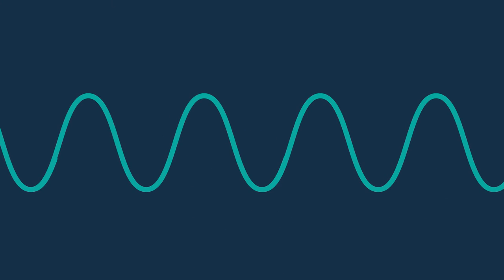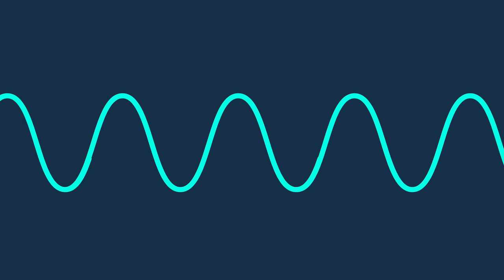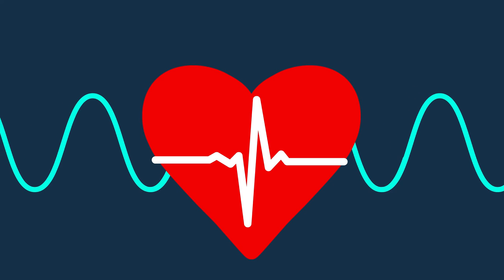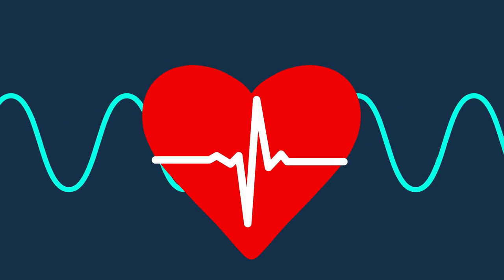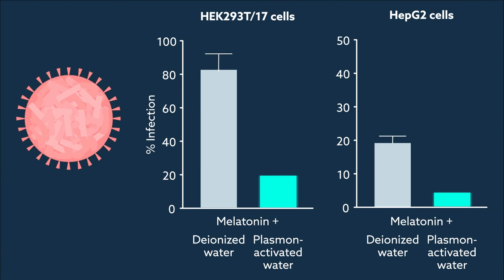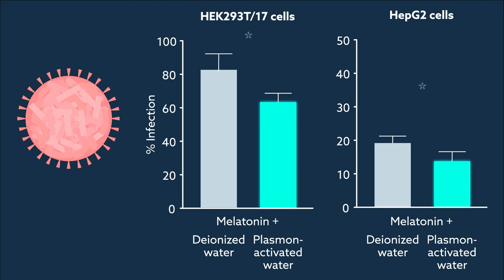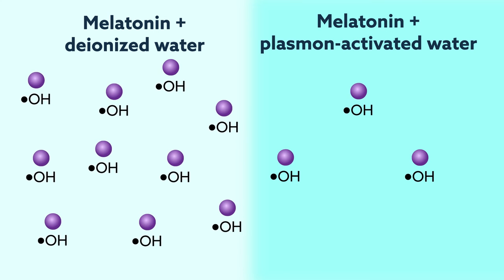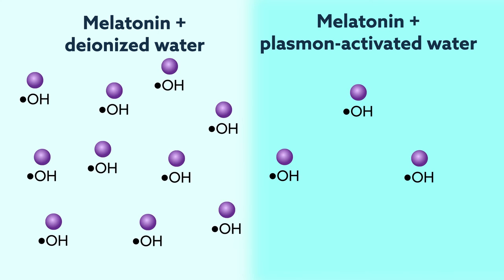What's more, not only did melatonin dissolve more easily in plasmin-activated water, it also showed improved health benefits when prepared this way than when dissolved in unaltered deionized water. In the laboratory, human cells were less likely to be infected with the virus that causes dengue fever and had an improved ability to clear hydroxyl radicals, harmful molecules that can be incredibly damaging to cells.